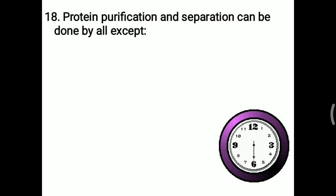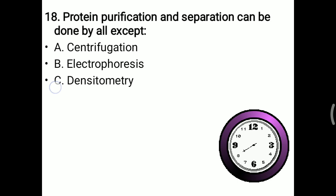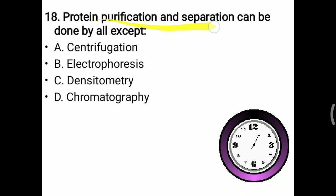Next question: protein purification and separation can be done by all except. Options: centrifugation (yes, helps purify and separate protein), electrophoresis (commonly used for purification and separation), densitometry (detects density of accumulated molecules but does not help in purification or separation), chromatography (used for separation and purification). So the right answer is C — densitometry cannot be used for purification and separation of protein.